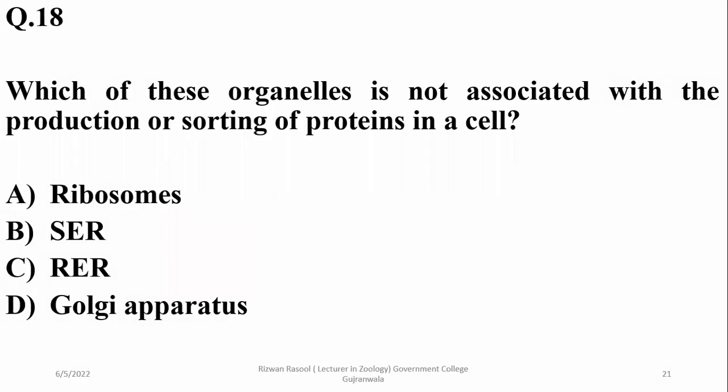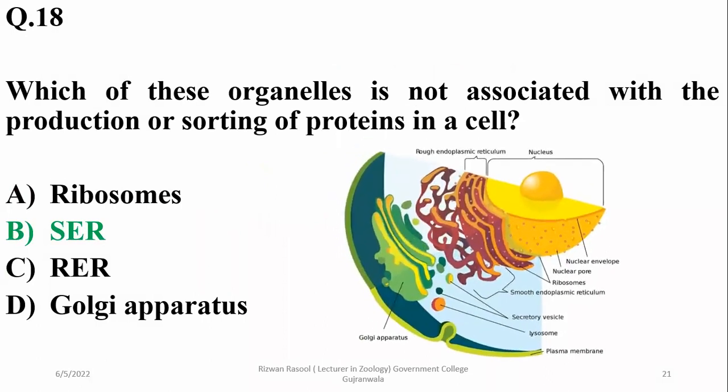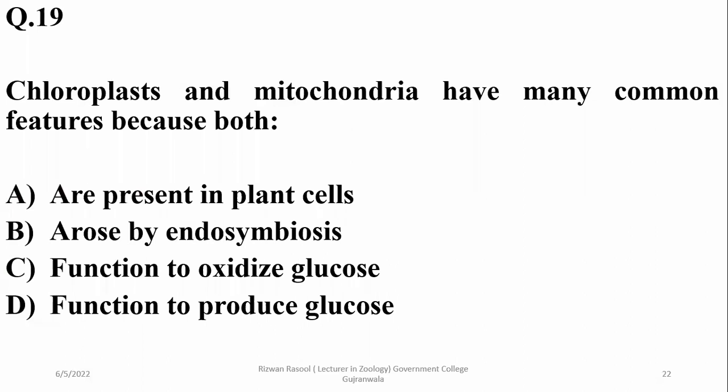Question 18: Which of these organelles is not associated with the production or sorting of proteins in a cell? Ribosomes, RER, and Golgi are involved in protein production and sorting. Smooth endoplasmic reticulum (SER) is specifically not related to protein sorting or synthesis. Right option is B (SER).